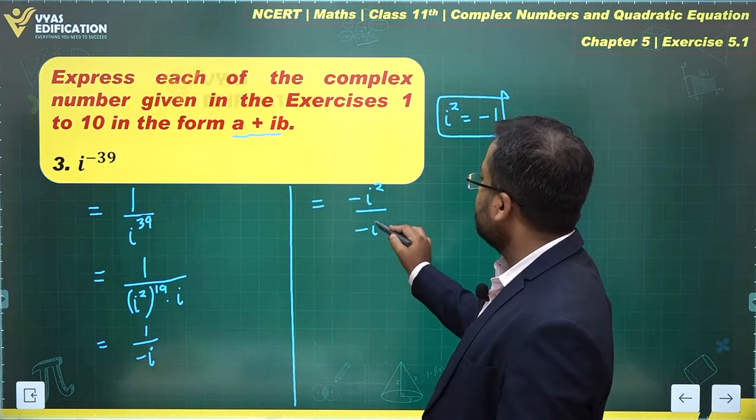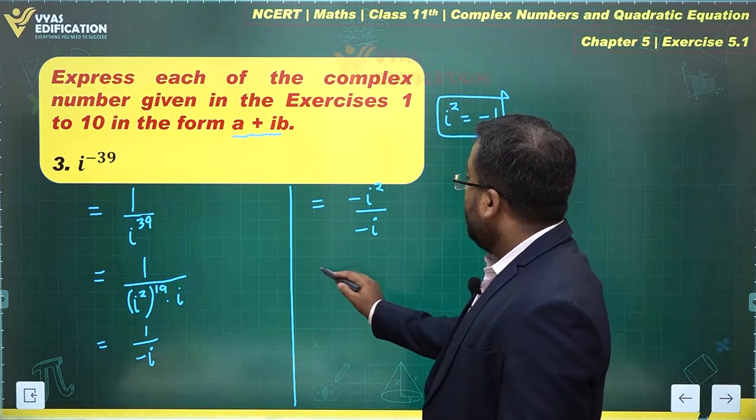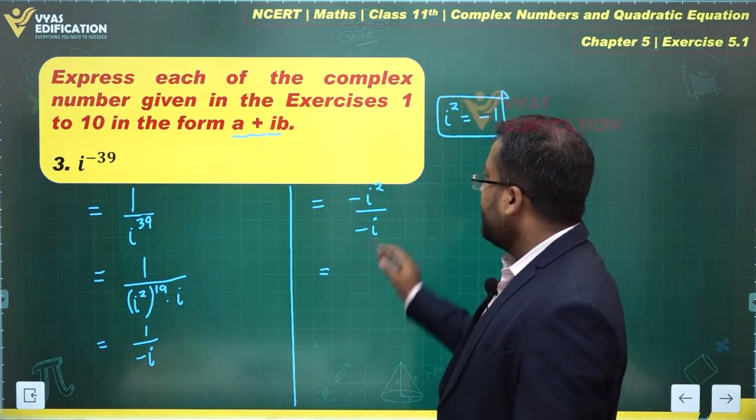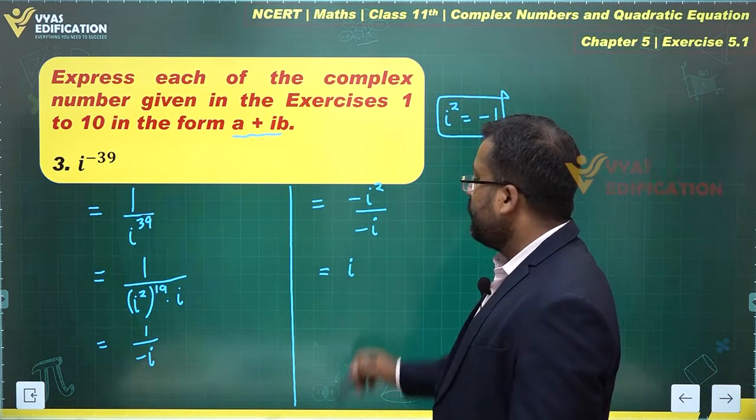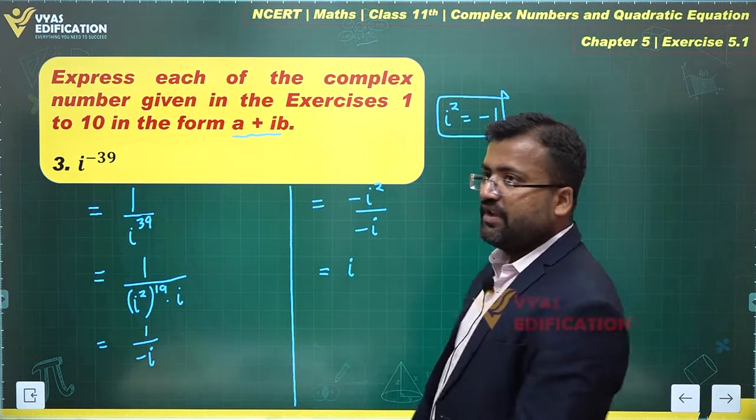On observing this, the minus will get cancelled. i squared upon i will be simply equal to i, and this is the final answer.